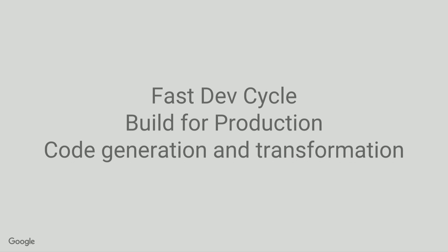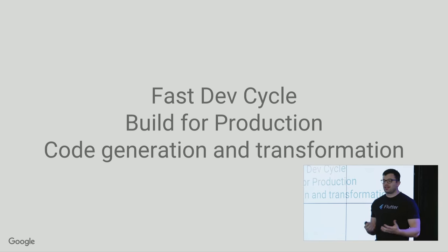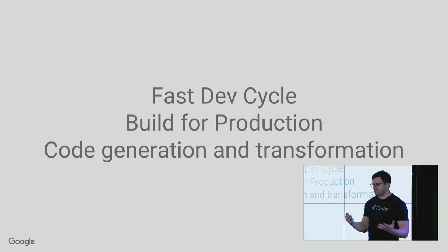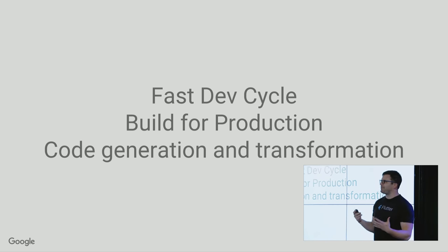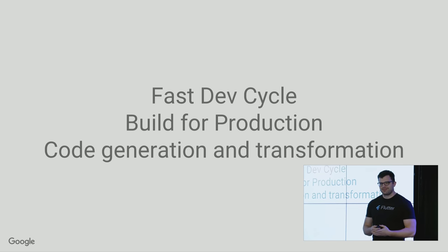We've talked a lot at the summit from our customers. It's great hearing that people love having a fast dev cycle. Obviously, on the website, they want to be able to build for production. And they need to do things like code generation and code transformation — the great talk yesterday about source gen makes that obvious.